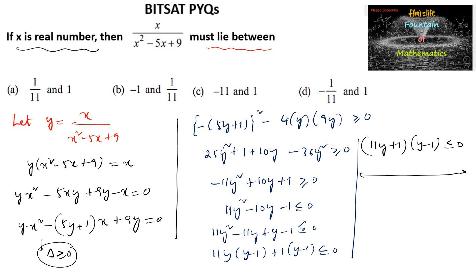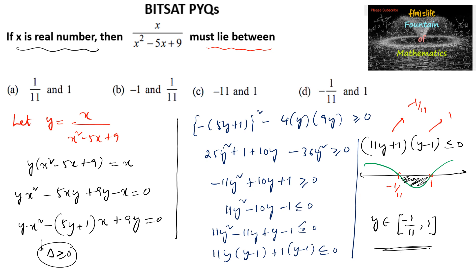Taking the critical values y = 1 and y = -1/11, we apply the wavy curve method. The solution lies between -1/11 and 1, so y ∈ [-1/11, 1]. Therefore the range of this function is [-1/11, 1], which is option D.